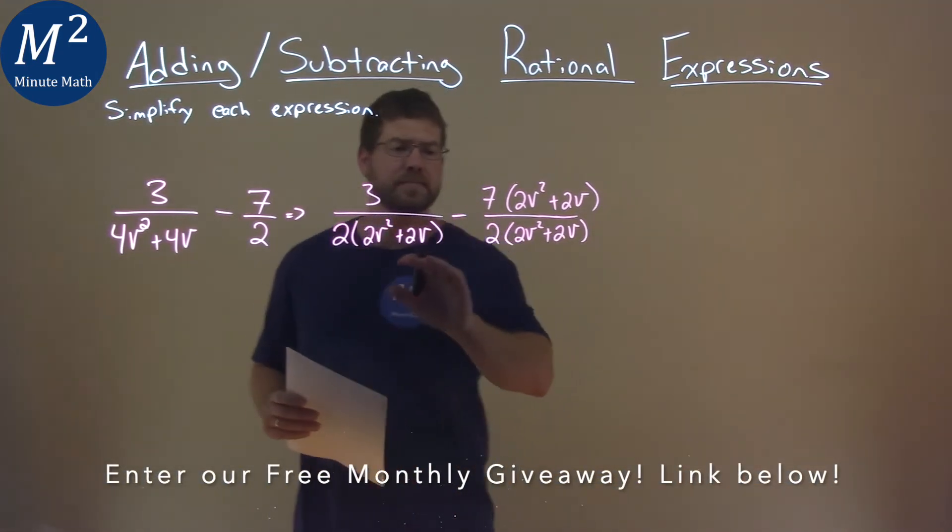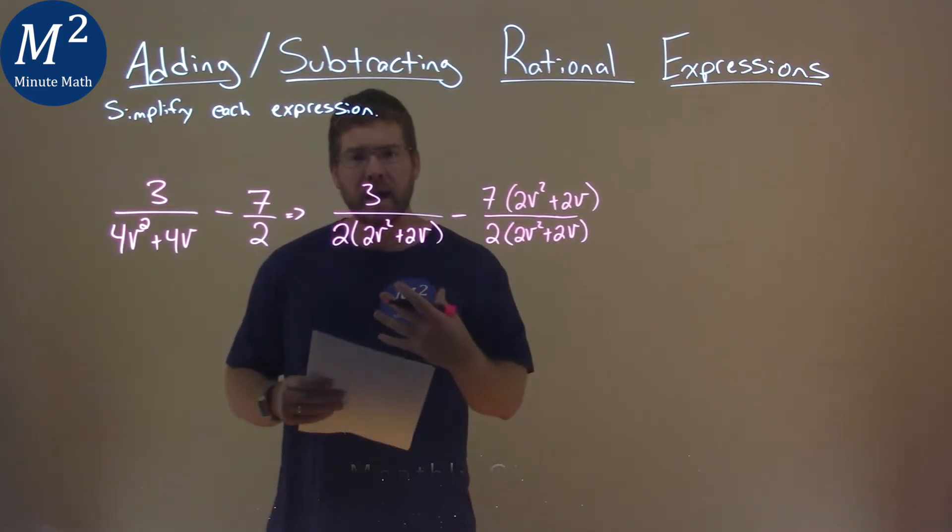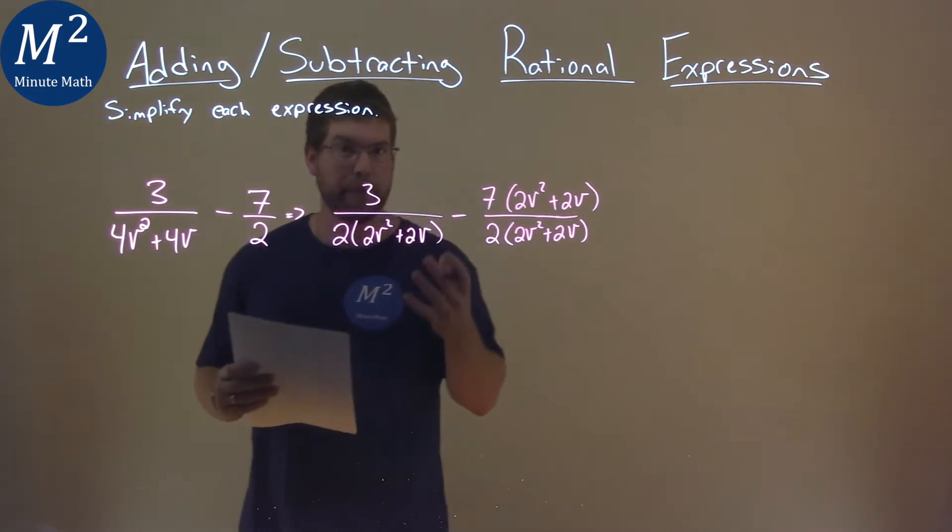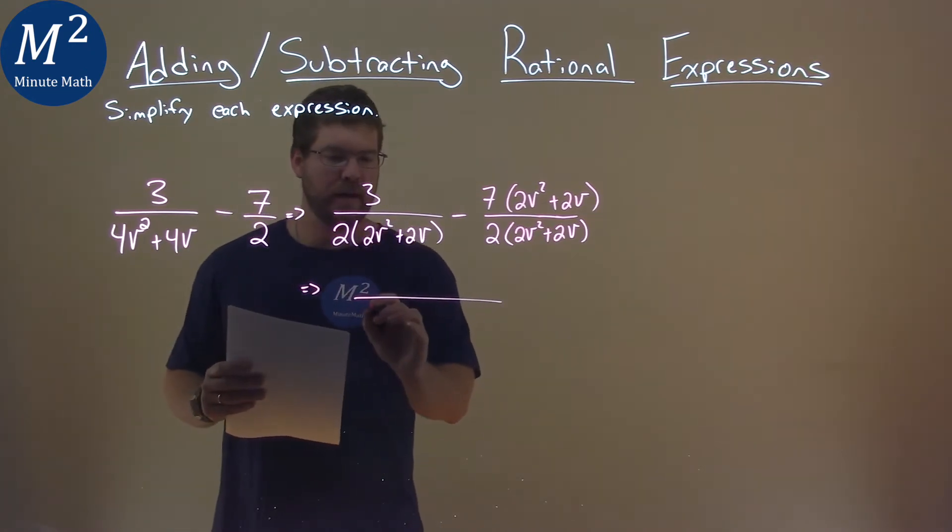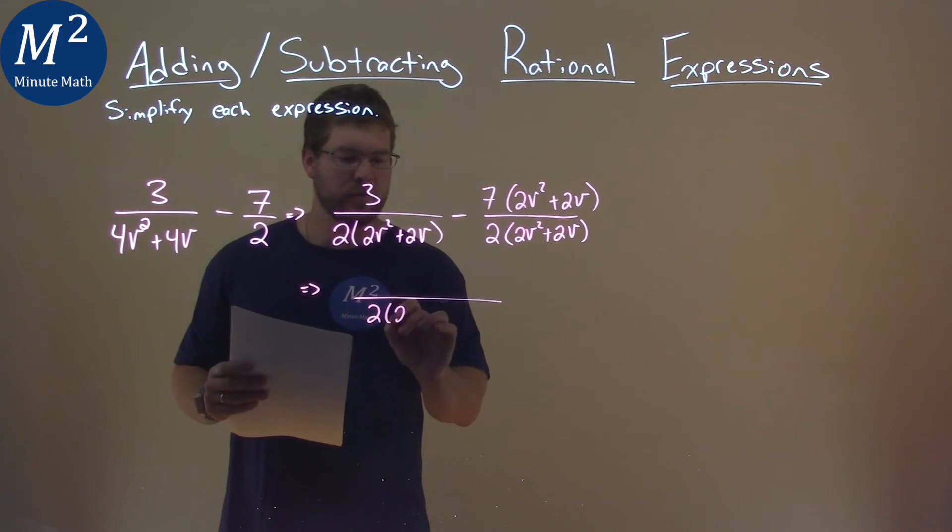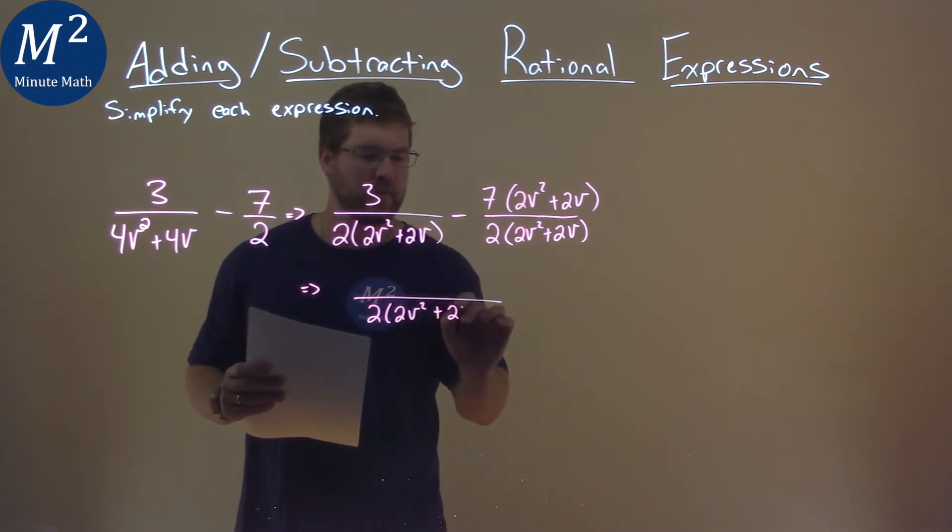So now with that, that means we can combine these fractions to be one big fraction. So let's go do that. Our denominator here, we have a 2 times 2v² plus 2v now.